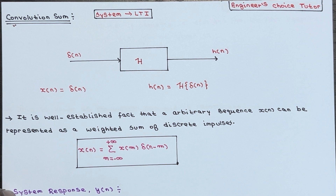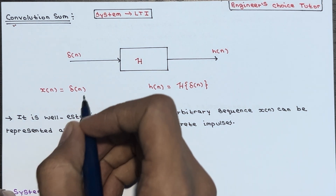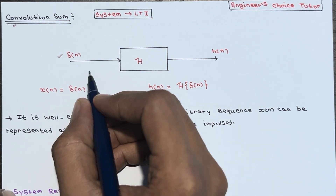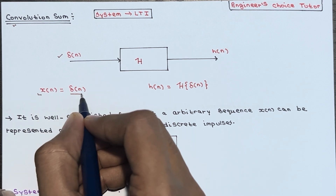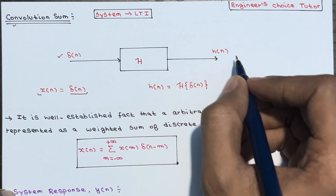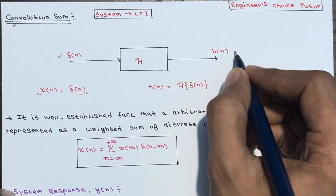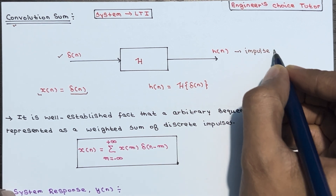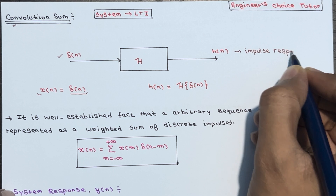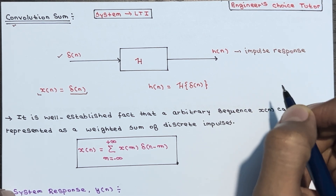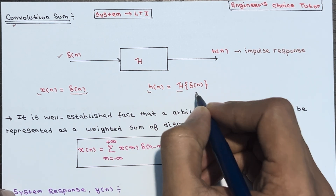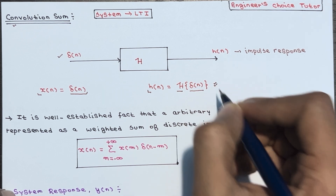When the input to the system is a unit impulse, symbolized as X(n) = δ(n), the resulting output is referred to as the impulse response, denoted by H(n), where H(n) is the transform of δ(n).